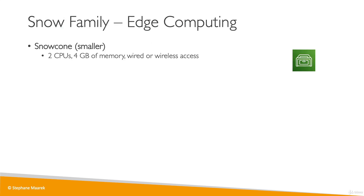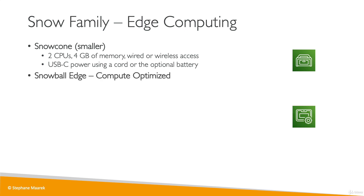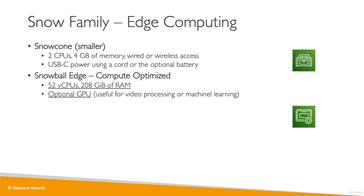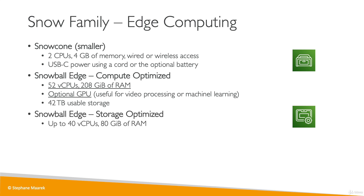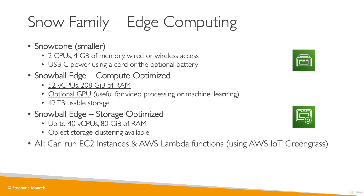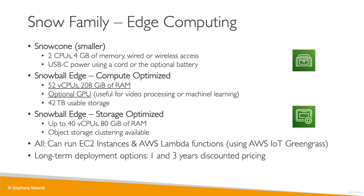For edge computing devices: the Snowcone has two CPUs, four gigabytes of memory, wired or wireless (Wi-Fi) access, and is powered by USB-C with an optional battery. The Snowball Edge compute optimized has 52 vCPUs, 200 gigabytes of RAM, an optional GPU for video processing or machine learning, and 42 terabytes of usable storage. The Snowball Edge storage optimized has 40 CPUs and 80 gigabytes of RAM, with object storage clustering available. All devices can run EC2 instances or Lambda functions using AWS IoT Greengrass. Long-term deployment options with discounted pricing are available for one or three year commitments.